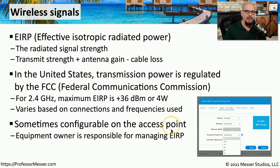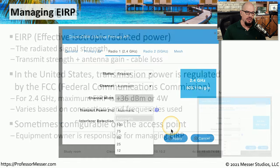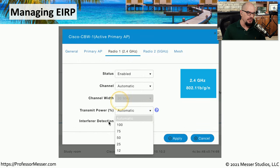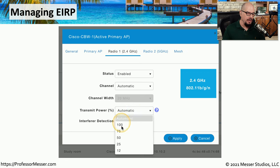Often on the access point you have control over how much signal you're sending. Here's a close-up view showing a transmit power percentage, which can be set to automatic. On this access point, you can set it to 100%, 75%, 50%, 25%, or 12%.